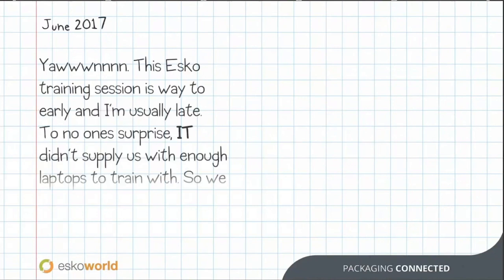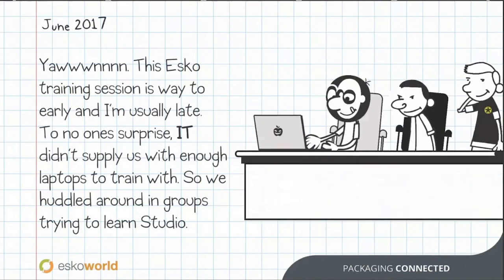June 2017. The Esko training session was way too early, and I'm usually late. IT didn't supply us with enough laptops to train with, so we had a lot of random groups trying to learn in Studio. We had a representative, Paul Plank — a graphic designer who knew Adobe Illustrator. He was able to walk us through and get our feet wet. Paul was great; he was like our shepherd, able to guide us. Over the course of two days, he taught us Studio and we were on our way to creating 3D packages.